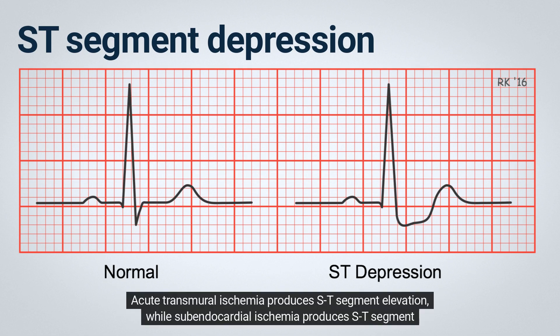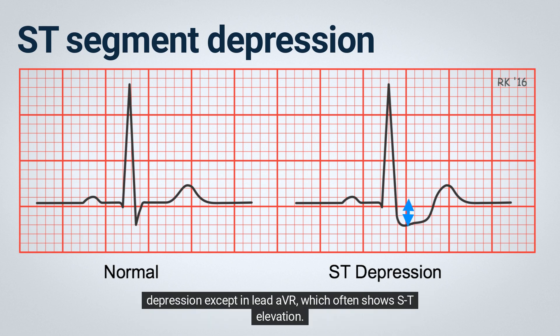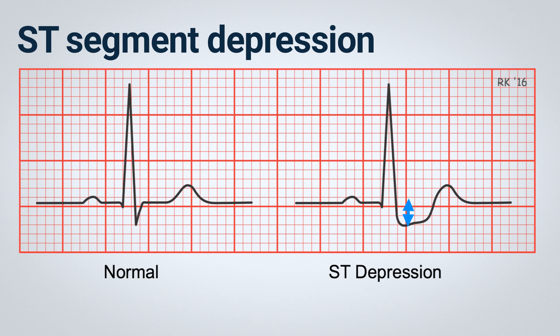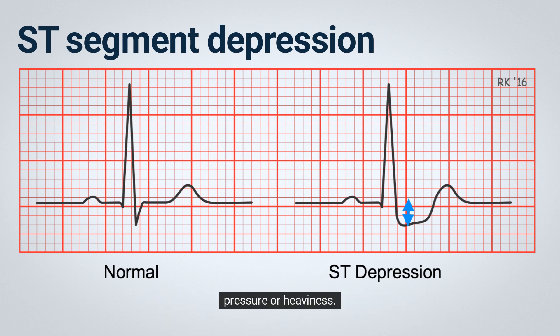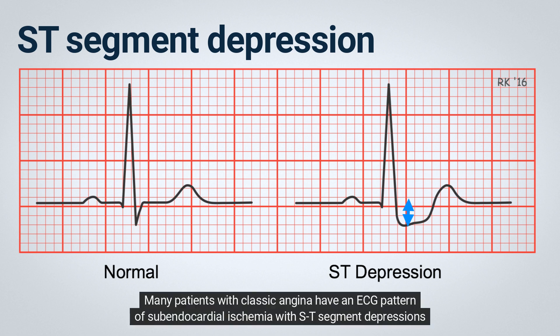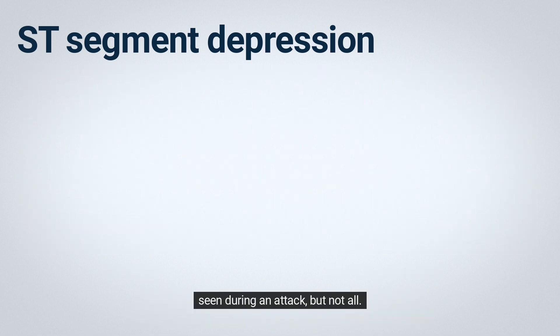Acute transmural ischemia produces ST segment elevation while subendocardial ischemia produces ST segment depression, except in lead aVR which often shows ST elevation. Angina pectoris, a symptom of coronary artery disease, is experienced as a dull, burning, or boring substernal pressure or heaviness. Many patients with classic angina have an ECG pattern of subendocardial ischemia with ST segment depressions seen during an attack.